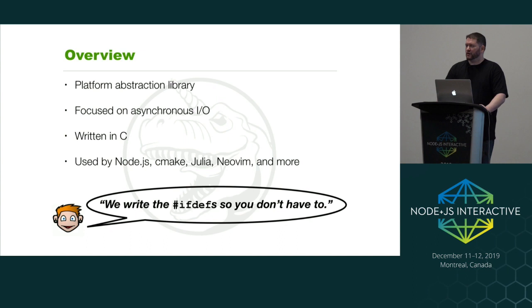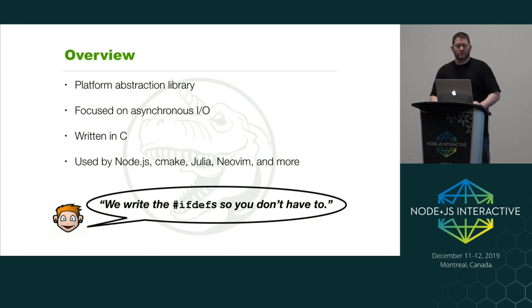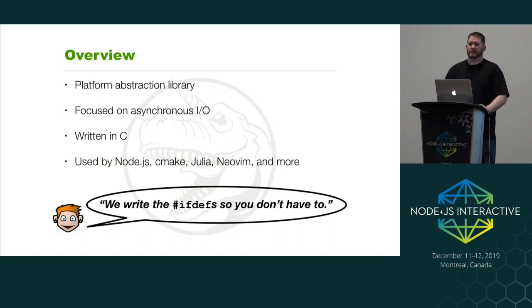If you look inside the Node.js C++ codebase there is some branching — some if defs based on what platform you're executing on — but it's really not that bad. If you dive down into the LibUV source code, it's a whole other story. There are if defs all over the place, and there are actually two different source trees: one for Windows and one for everything else. There's a lot of branching logic that gives a nice consistent API to people who want to build on top of LibUV.